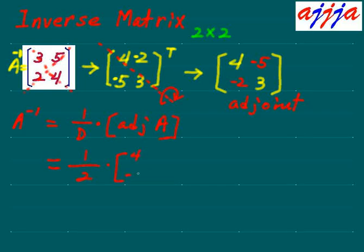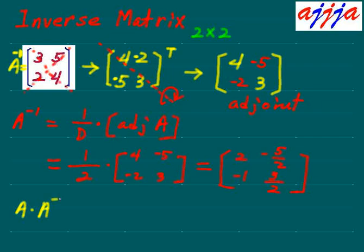So the inverse is one-half times the adjugate, which is the matrix with entries four, negative two, negative five, and three. That gives us: half of four is two, negative two over two is negative one, negative five over two stays as negative five-halves, and three over two stays as three-halves. That is the inverse matrix.